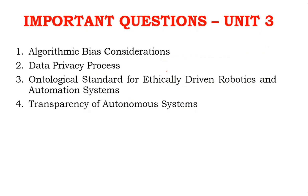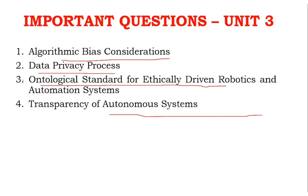For Unit 3, four questions are important: algorithm bias consideration, data privacy process, ontological standards for ethically driven robots, and transparency of autonomous systems. Two of these are the most important questions.